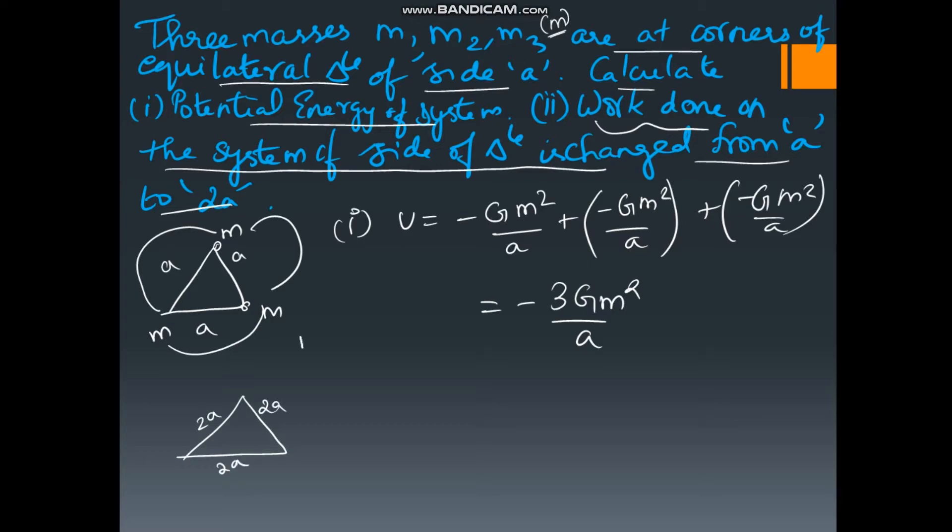Work done is nothing but delta U, which is U2 minus U1. Let us find potential energy when the side is changed to 2A.